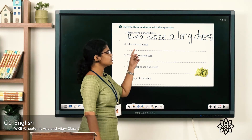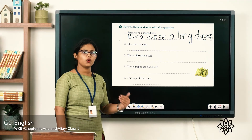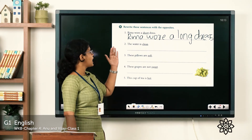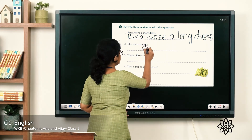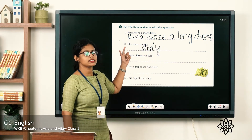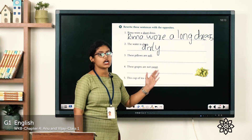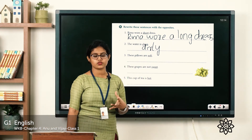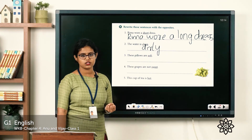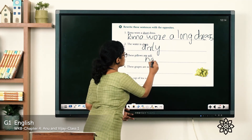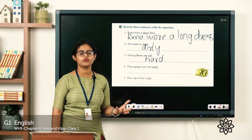See the next one: 'The water is clean.' You have to find the opposite word for clean. Clean means very neat and tidy. We rewrite the sentence as 'The water is dirty' — the opposite word for clean is dirty. Coming to the next one: 'These pillows are soft.' Soft means very smooth to touch. The opposite word for soft is hard. So we rewrite it as 'These pillows are hard.'